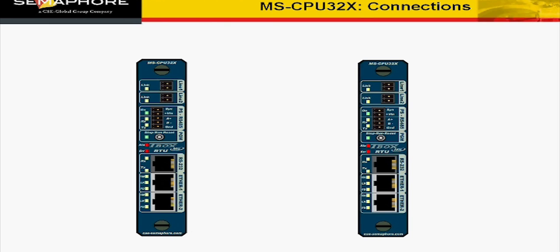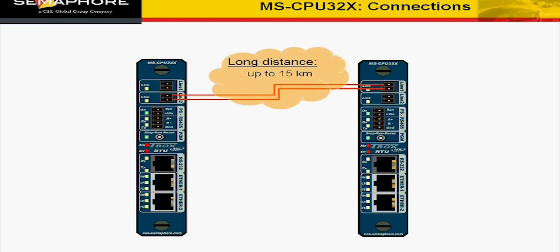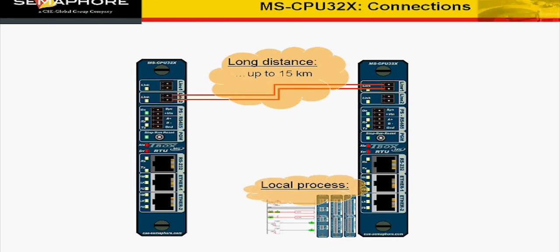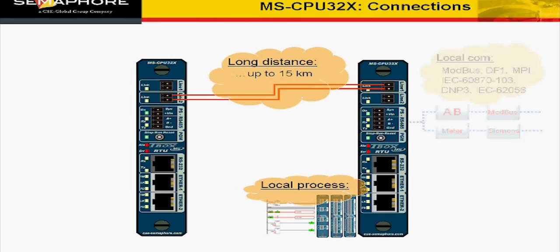To illustrate the possible communication, let's use two MS-CPU32X. SH-DSL modems allow connection up to 15 km through a pair of cables. Each CPU has its local process controlling I/O through ladder or BASIC. Each CPU has local communication to field devices or existing equipment in Modbus or other standard protocols.